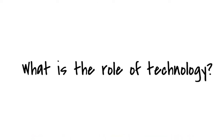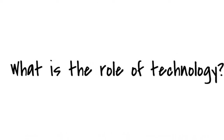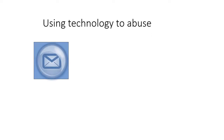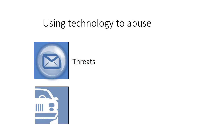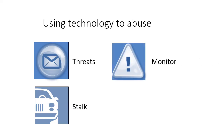While technology can help victims access services and information, it can also be used by abusers to further exert power and control. Perpetrators might use technology to send threats or disturbing information via email, or to post fake or hurtful information on blogs. To monitor or stalk the victim, an abuser might install devices on the victim's car or install spyware on the victim's phone to stalk and track them.